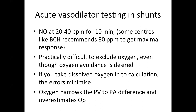However, whenever we are calculating the QP/QS, oxygen avoidance is desired. The reason being, the moment we start giving oxygen, dissolved oxygen goes up and we need to factor in the entire dissolved oxygen into the calculations, especially pulmonary vein. In some healthy lungs, PO2 in the pulmonary veins can even go to 500 mmHg. So dissolved oxygen needs to be factored. Use of oxygen will narrow the PV to PA difference and thereby lead to overestimation of the QP.